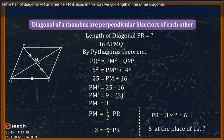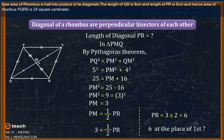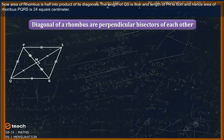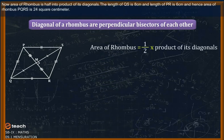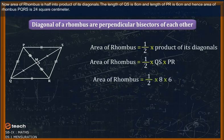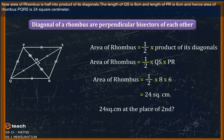PM is half of diagonal PR, hence PR = 6 cm. We have found the length of the other diagonal. Area of rhombus = (1/2) × product of its diagonals = (1/2) × 8 × 6 = 24 square cm.